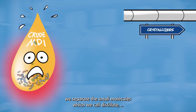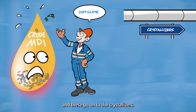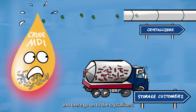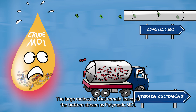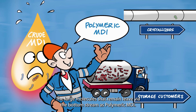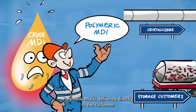Using heat, we separate the small molecules, which we call distillate, and these go onto the crystallizers. The large molecules that remain leave via the bottom stream as polymeric MDI. Polymeric MDI is delivered directly to the customer.